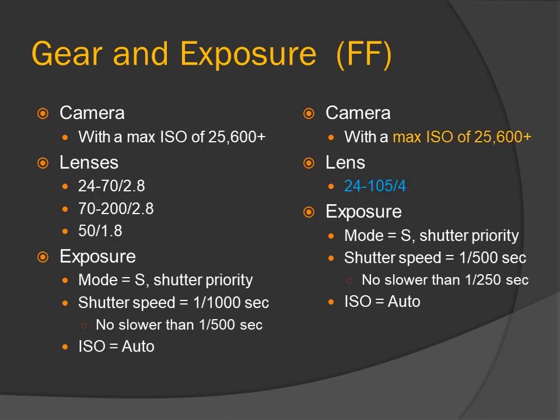And for the general purpose lens — camera with a max ISO of 25600 plus. The general purpose lens: 24-105mm f/4. Exposure: shutter priority. Shutter speed 1/500th of a second. ISO: auto.